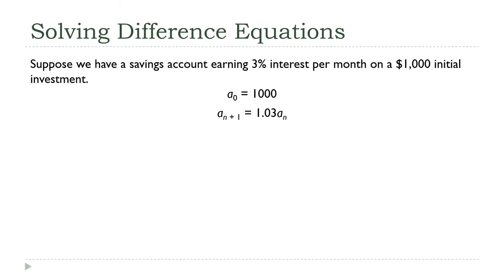Let's take a look at our savings account example. This is the difference equation we developed in the last lecture: we have an initial investment of a thousand dollars, that's a₀, and we defined this recursively as aₙ₊₁ = 1.03·aₙ. What I want to do is get a formula for aₙ in terms of n alone.